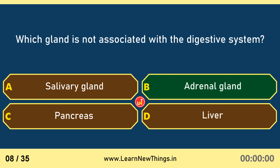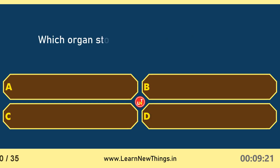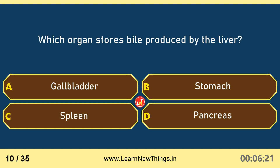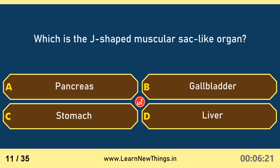The adrenal gland is not associated with the digestive system. Bile is a digestive fluid produced by the liver. The gallbladder stores bile produced by the liver. The stomach is the J-shaped muscular sac-like organ.